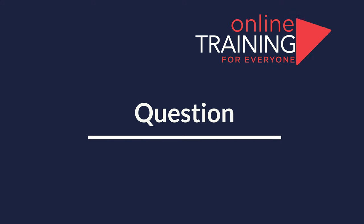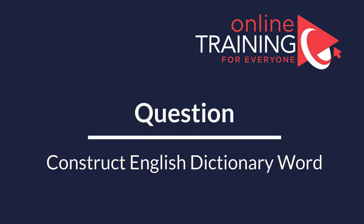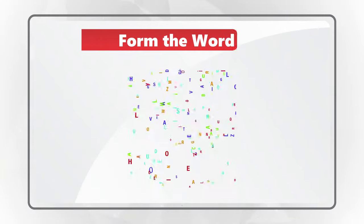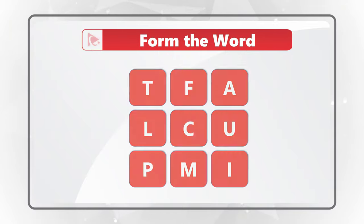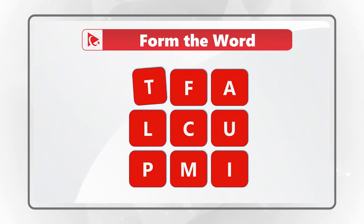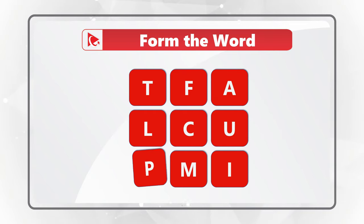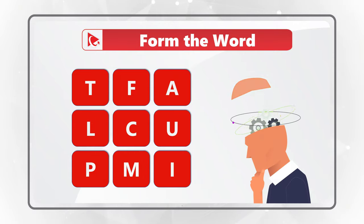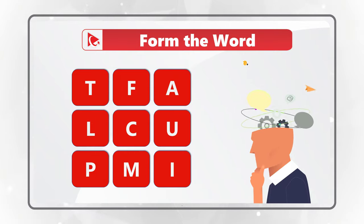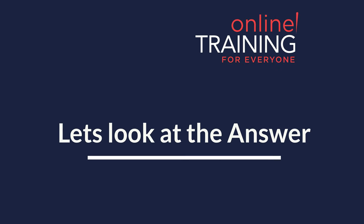This question truly tests your knowledge of the English dictionary. You need to form a word using all the letters only once. There are nine letters: T-F-A-L-C-U-P-M-I. Give yourself a little bit of time — it's a very complex nine-letter word. Consider pausing the video to get to the correct answer. As you might have guessed, the correct word is impactful.